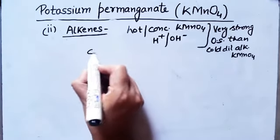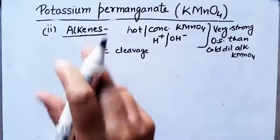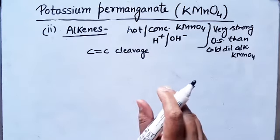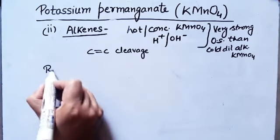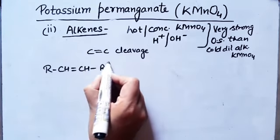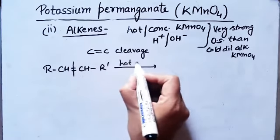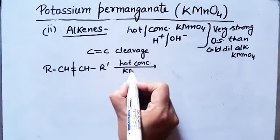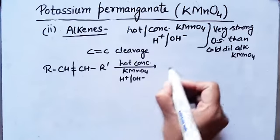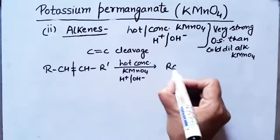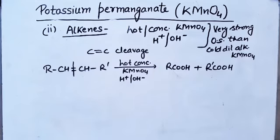With hot concentrated KMnO₄, carbon-carbon bond cleavage occurs — the C=C bond of the alkene breaks — and you will get either acids or ketones. If we take a simple alkene, cleavage occurs at the double bond when hot concentrated KMnO₄ is used. The medium can be acidic or basic. From bond cleavage, you get two carboxylic acids.